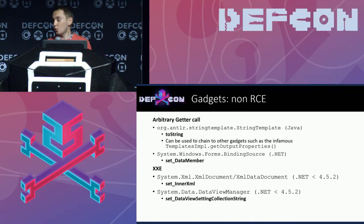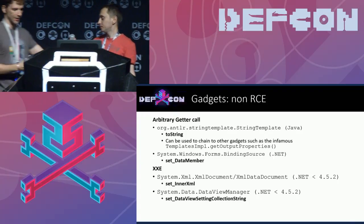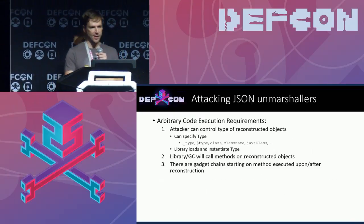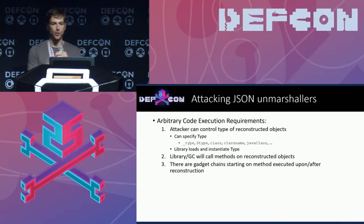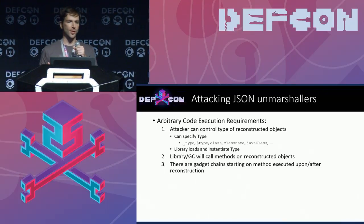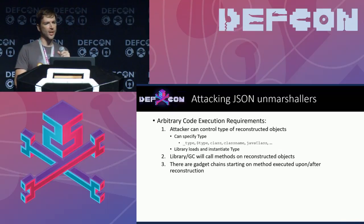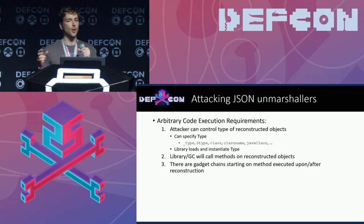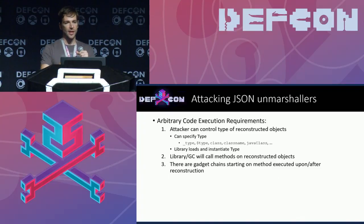Now back to Alvaro. He will show where we can use these gadgets. We analyzed multiple Java and .NET JSON libraries and found that most of them were vulnerable to arbitrary code execution — some in their default configuration, and some requiring developers to enable or configure them in a special way.